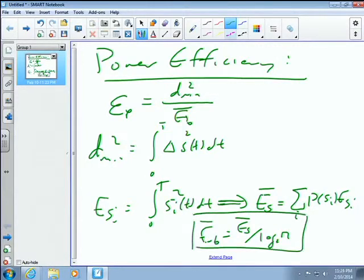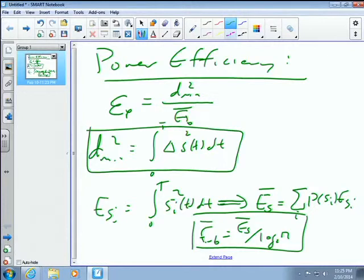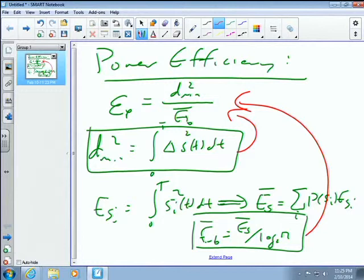And then EB bar is equal to ES bar divided by log base 2 of the signal constellation points. So if you have that and you have this, you can then solve for your power efficiency. This is just to recap what we've been doing so far in this course.